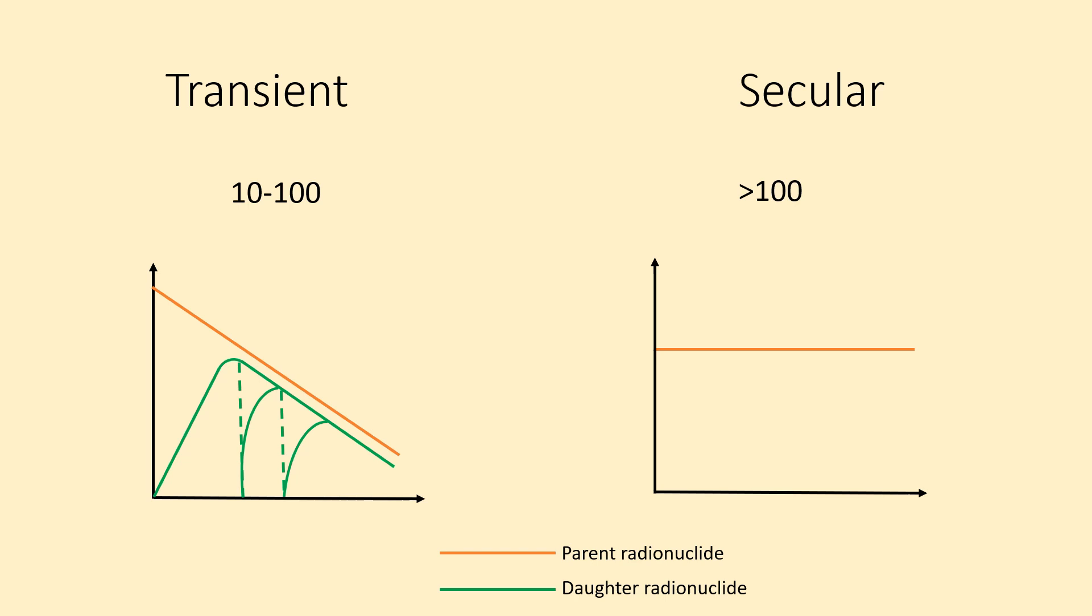The daughter radionuclide also appears to decay with the same half-life as that of the parent in the mixture. This is because for daughter to undergo decay, it must also be formed from the parent. As the parent half-life is so long, decay is very slow and thus daughter decay also depends on the parent decay.